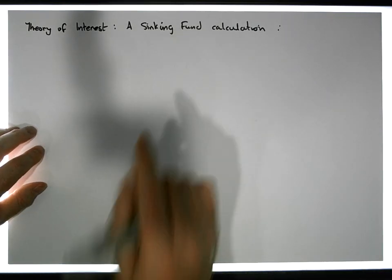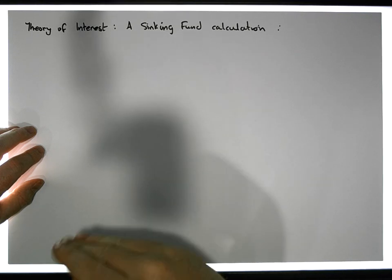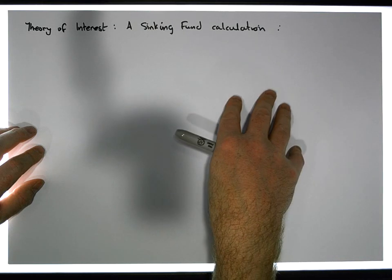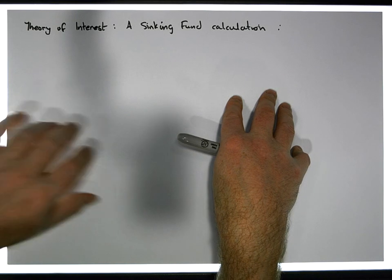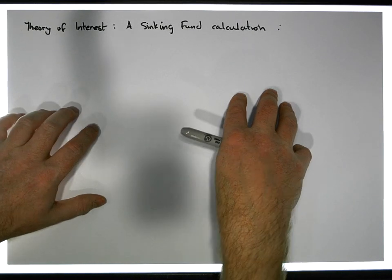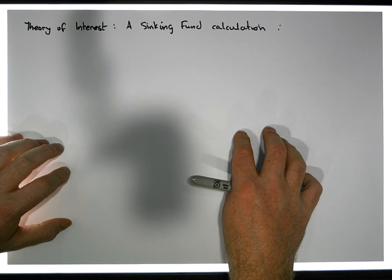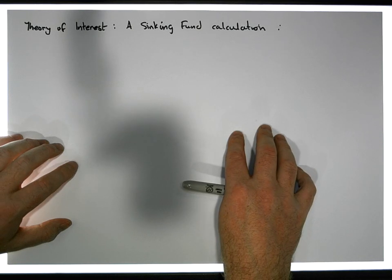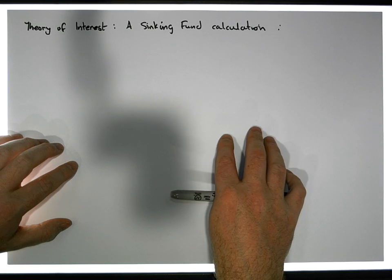The scenario with respect to a sinking fund works like this. Let's assume that you're a manager or somebody that needs to make a purchase — let's say in five years time your company is going to require that its IT equipment be replaced. Computer equipment has a particular lifespan associated with it, so you need to replace your computer equipment in five years time. In five years time you estimate you're going to require 400,000 euros to make that particular purchase.